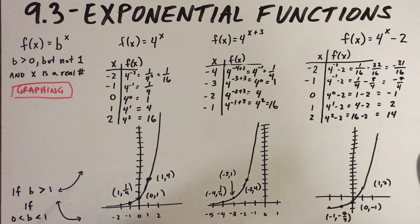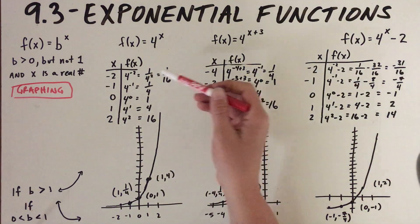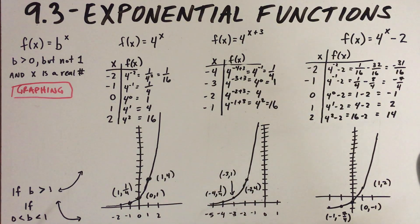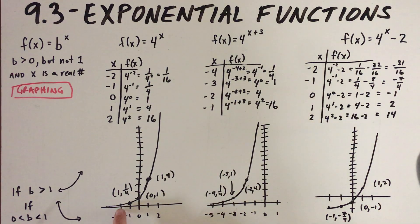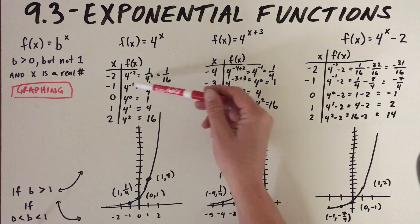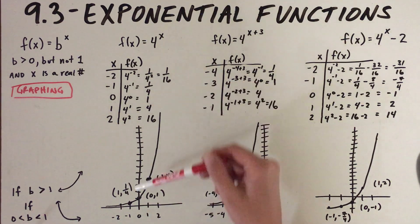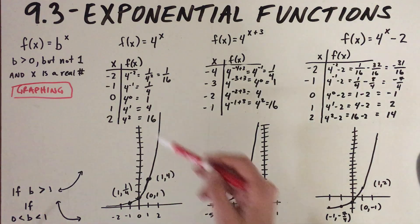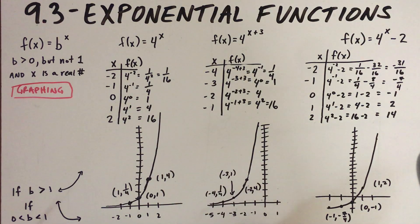When we plug in negative two, we get 4 to the negative two, which is the same as 1 over 4 squared using our rules of exponents, giving us the point (−2, 1/16). When we plug in negative one, 4 to the negative one is just 1/4, giving us the point (−1, 1/4). When we plug in zero, 4 to the zero power is 1.